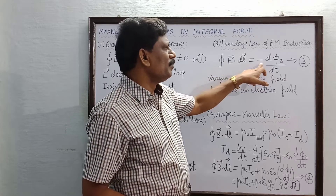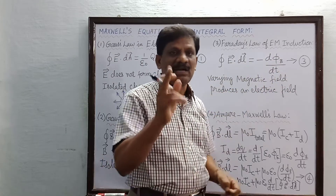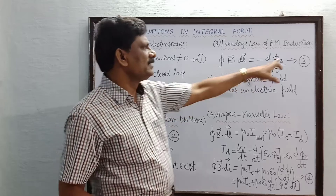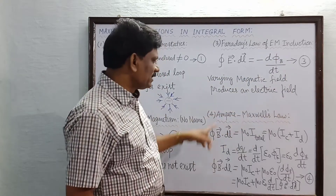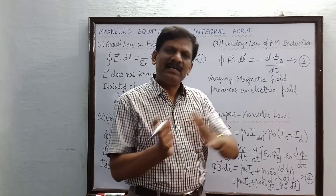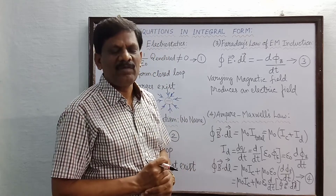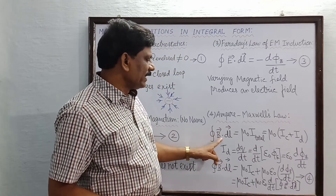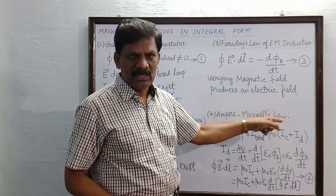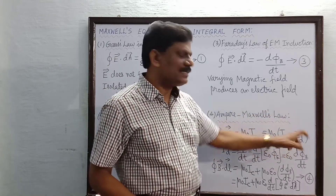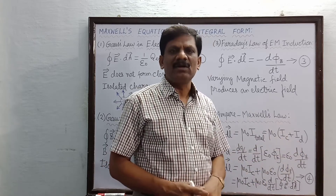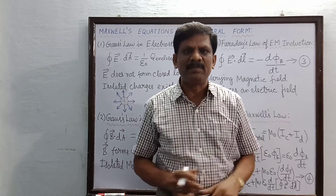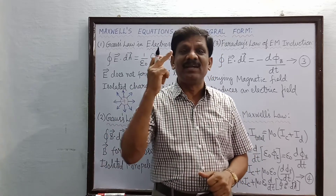The third law is Faraday's law of electromagnetic induction: integral E dot DL equals minus D phi by DT. The minus sign comes as a consequence of Lenz's law. Variations in the magnetic field will produce an electric field. The fourth equation is the Ampere-Maxwell's combined law, the modified Ampere's circuit law: closed integral B dot DL equals mu naught times I total, which equals mu naught times I_C plus I_D, where I_C is conduction current and I_D is displacement current. This equation indicates that a magnetic field can be produced by both conduction current and displacement current.